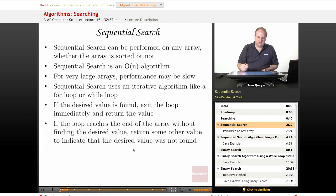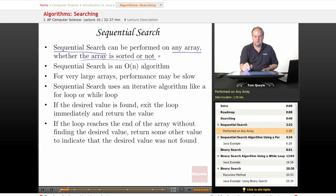The first type of search that we'll talk about in this lesson is sequential search. Sequential search can be performed on any array, whether the array is sorted or not. So if the array is not sorted, you must use a sequential search. If you're not sure if the array is going to be sorted, then you should use a sequential search.